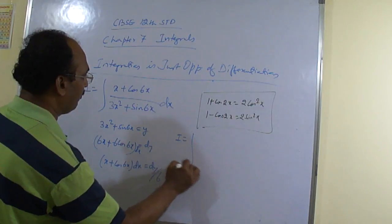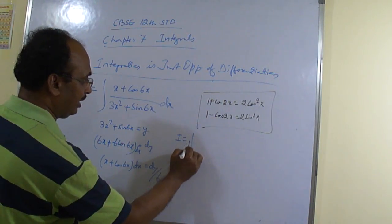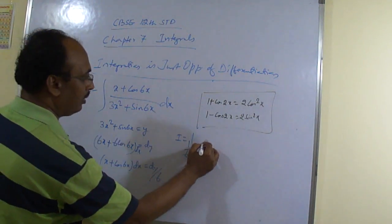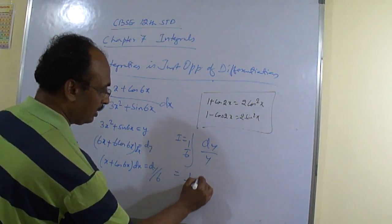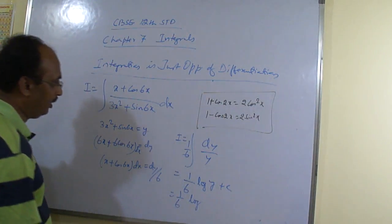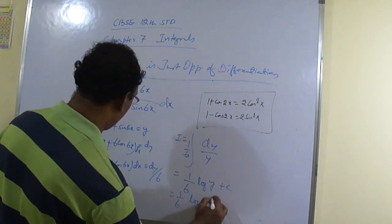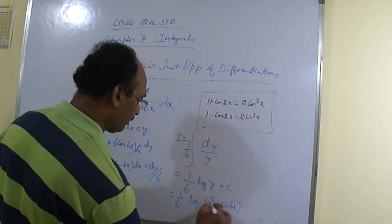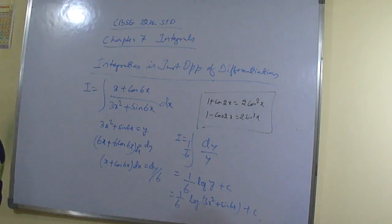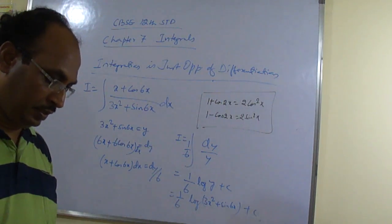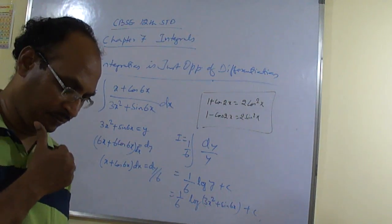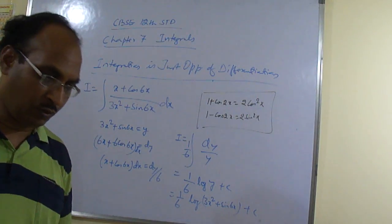Yes sir. So, we are able to substitute. So 1 by 6. Okay. So, your i is equal to? What? So, 1 by 6. Correct? 1 by 6. And this dx is equal to dy. Yeah. dy. dy. dy by y. dy by y. is equal to? 1 by 6. log y plus c. 1 by 6. Log. Again we substitute back. 3x square plus sin 6x plus c. Yes sir. Yes sir. Yes. Okay. Very good. Okay. Thank you.